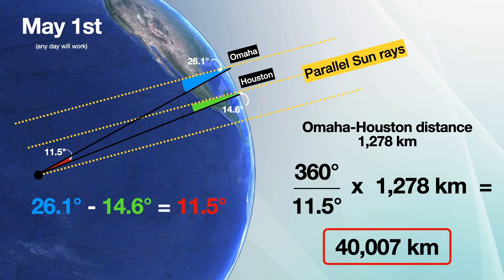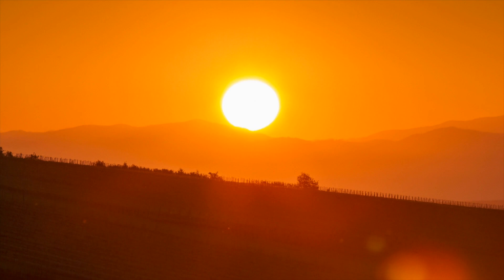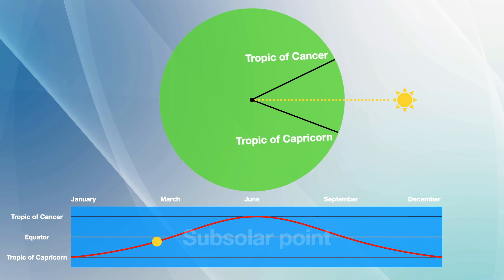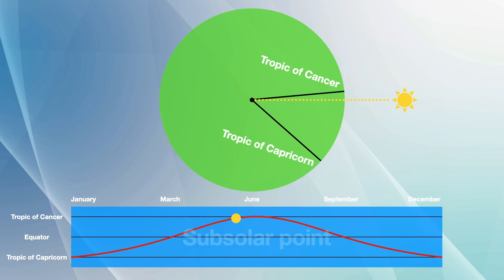You can even measure the sun's angle from your house and find earth's circumference on any day of the year. This is possible because every day there is a latitude on earth where the sun will be 90 degrees above the horizon, also known as the subsolar point. This location moves between the tropics of Cancer and Capricorn throughout the year.